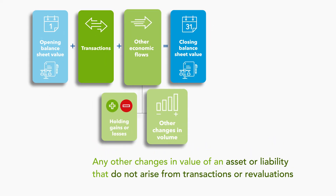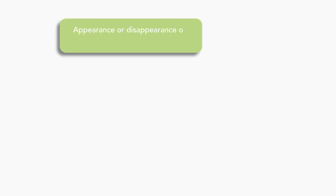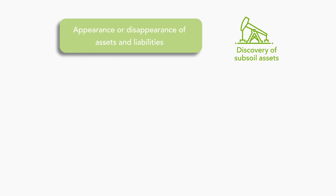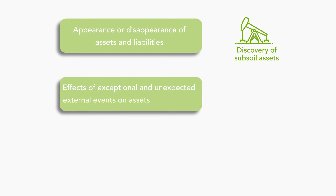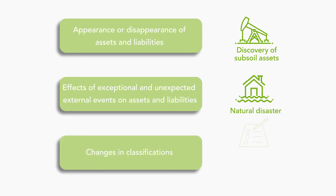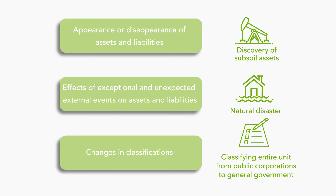These flows cover a wide range of economic events, including events that involve the appearance or disappearance of assets and liabilities — for example, the discovery of subsoil assets such as oil, or a creditor unilaterally writing off a financial claim that a debtor is unable to pay — the effects of exceptional and unexpected external events on assets and liabilities, such as a natural disaster, and changes in classifications, for example, classifying an entire unit — that is, all its assets and liabilities — from the public operations sector to the general government sector.